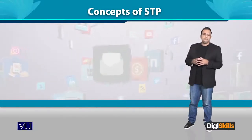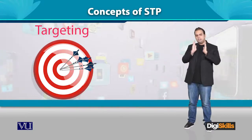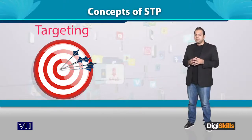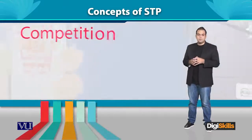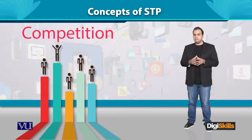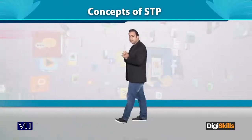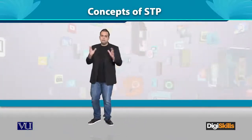Now, when you have different segments, the next concept is targeting. From those segments, you will choose specific segments to target. The first targeting criterion is competition. You will look at what the competitive situation is in that segment. For example, for the 20–25 age group, every company wants to send their message to them, so the competition is huge and ads become expensive.